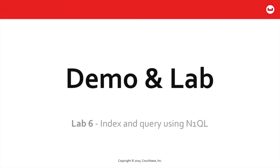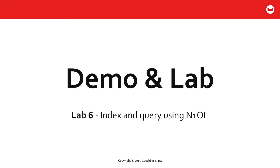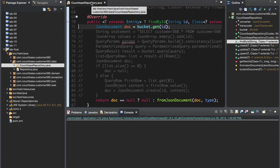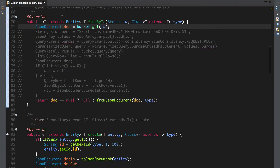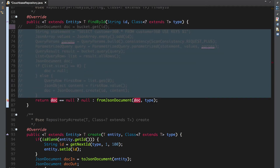In the demo and lab, you're going to do the necessary indexing to support ad hoc queries of a dataset that you've loaded, and then use the SDK to execute a query through the lab application. I've got our Couchbase repository open here from the solution code so we can compare what you did in the last lab — simply getting a particular document by ID — with how you would achieve the same result using N1QL.